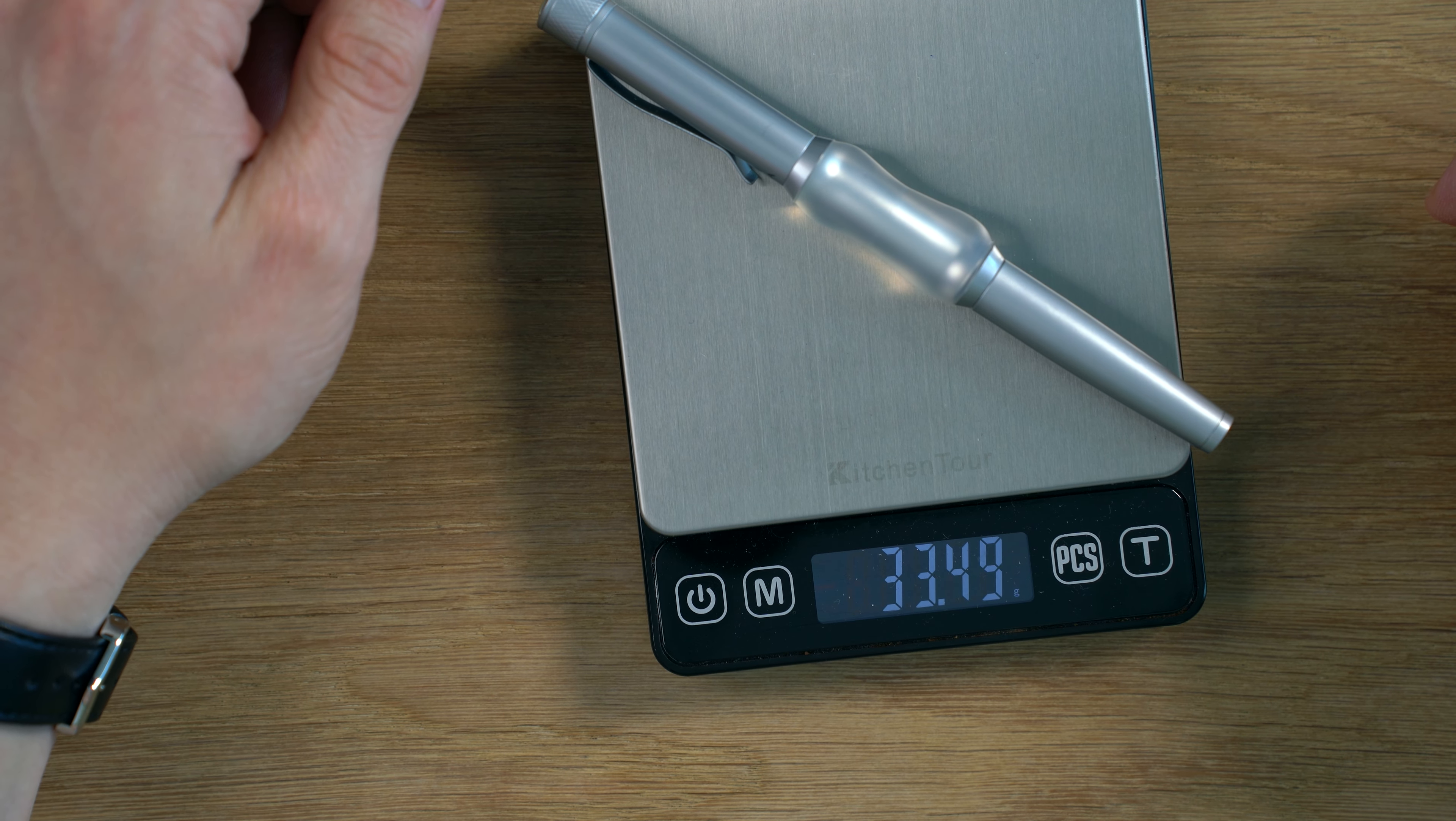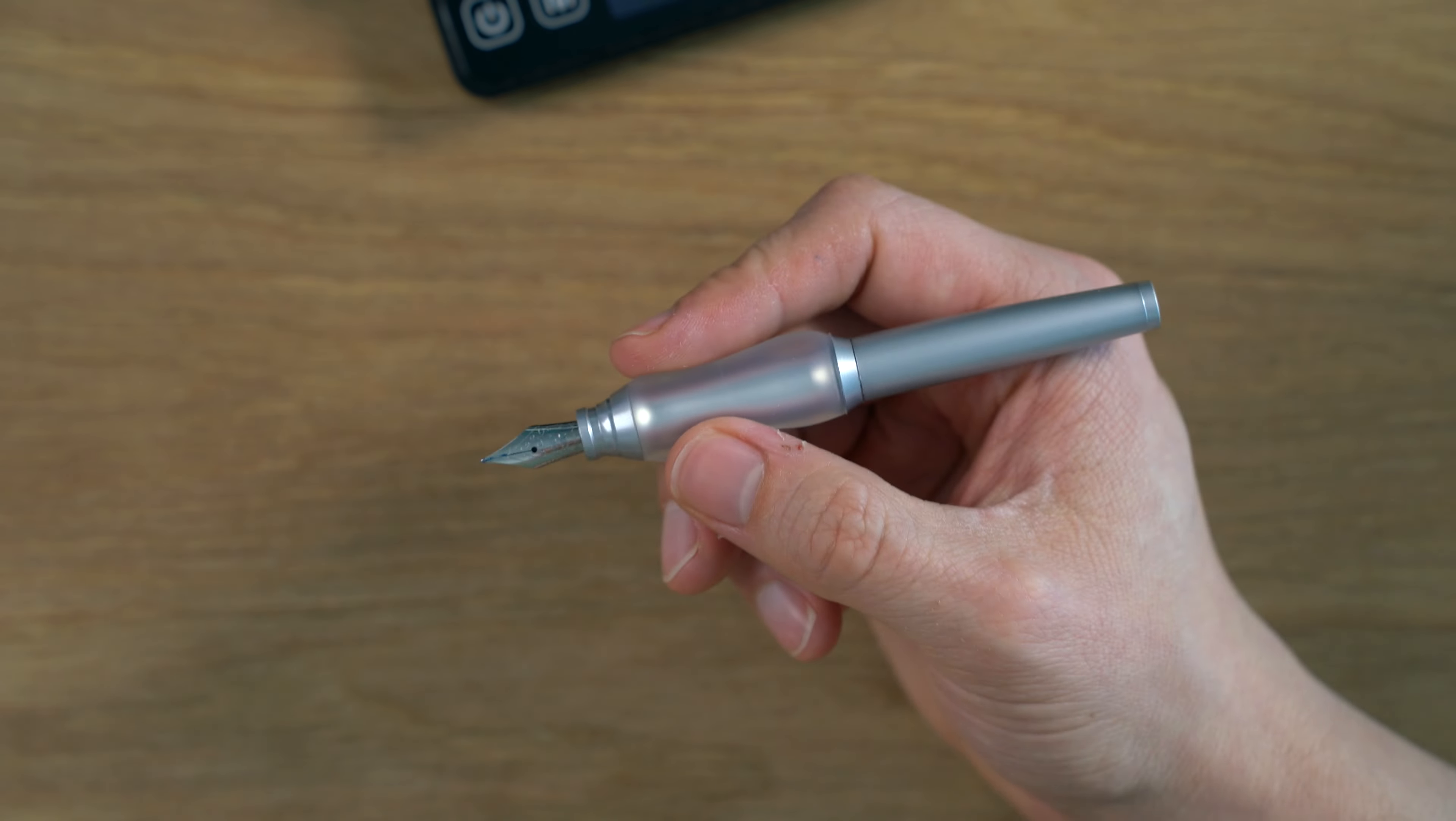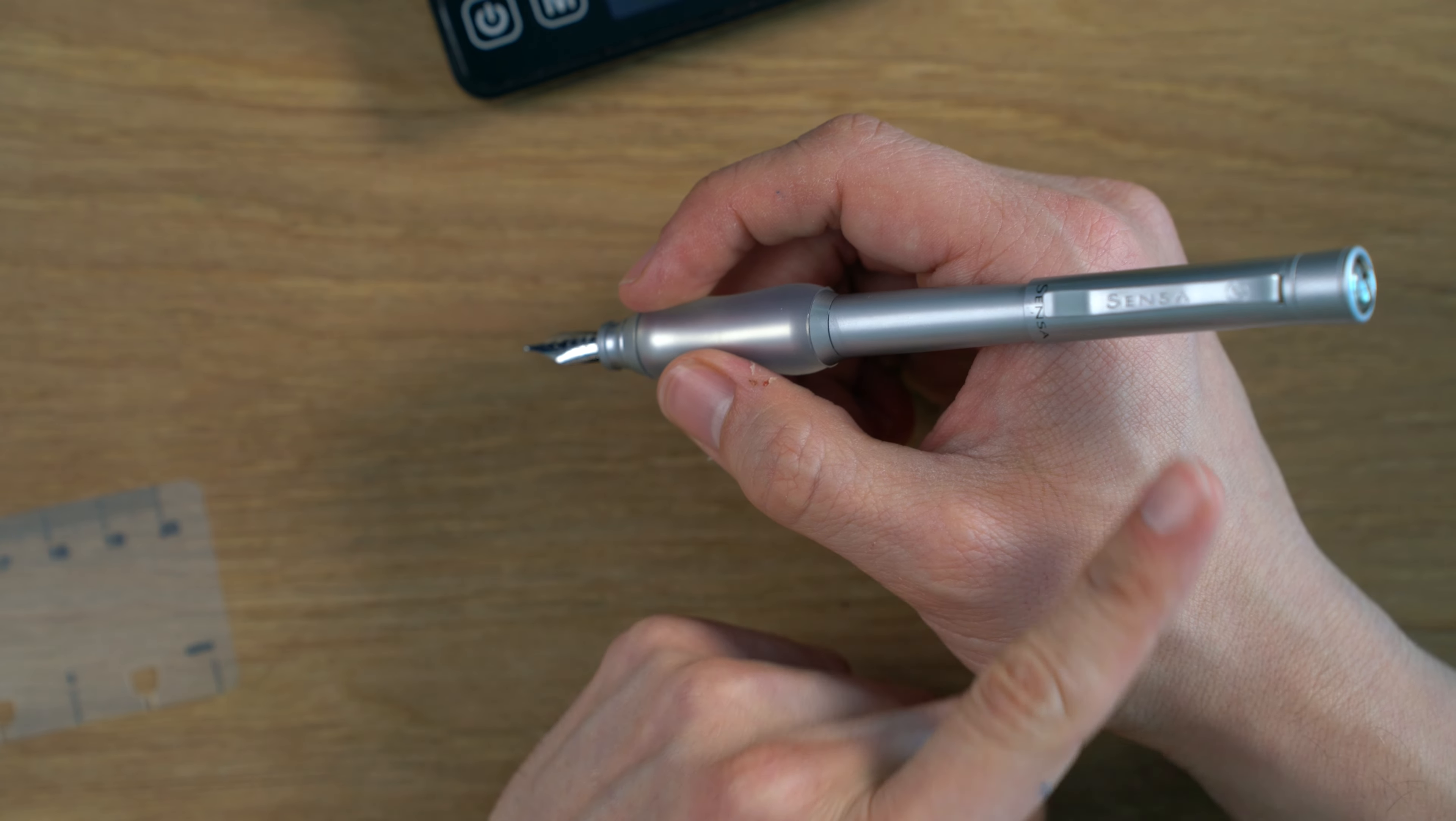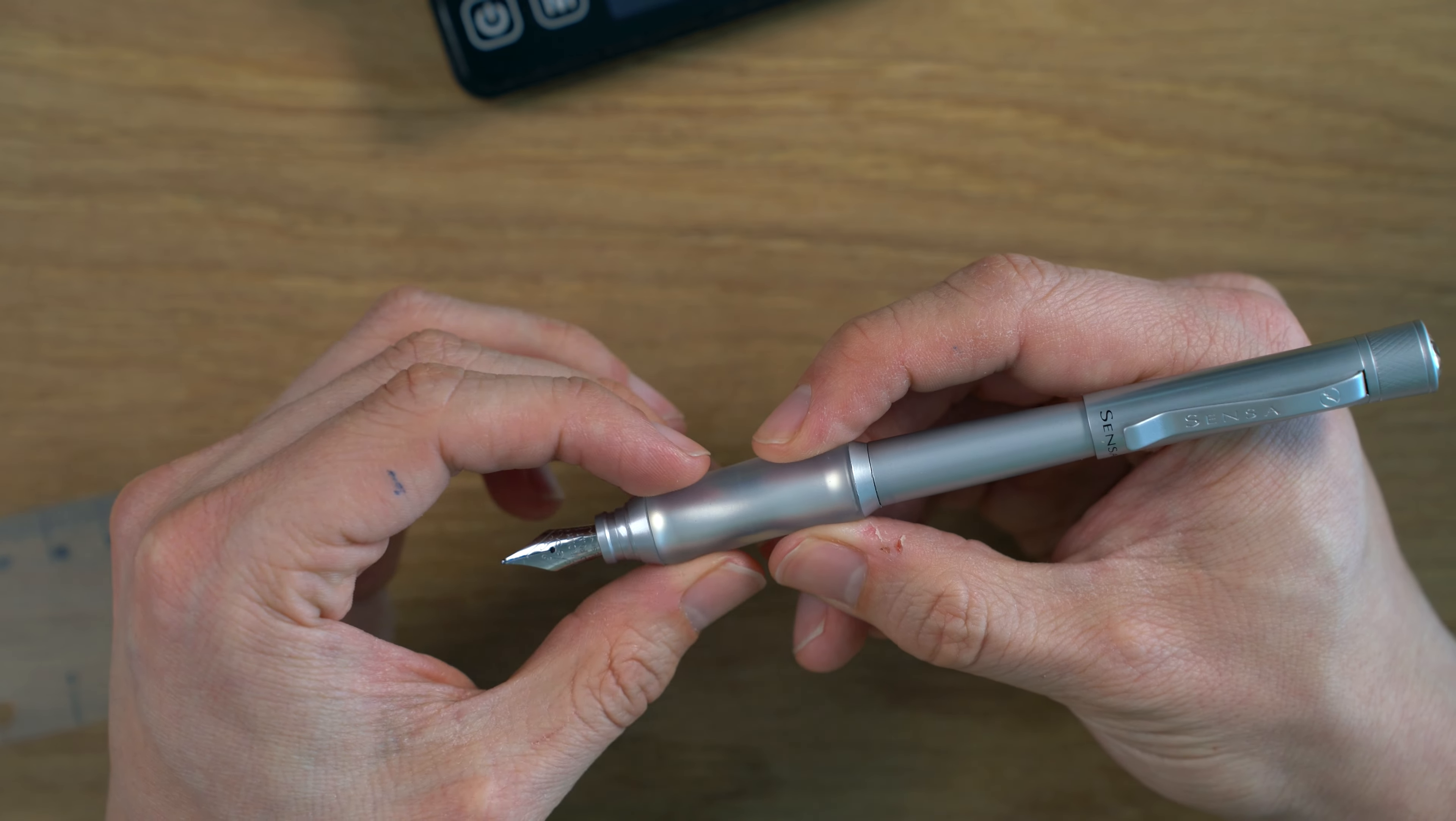Now, let's do the weight. 33.49 grams, so good weight to it. I mean, it is a metal pen. And then, unposted, 19.9. So, not too heavy unposted. It is a short pen. If you have big hands, you're going to want to use this posted. No question about it. I find it comfortable posted. Unposted does work for me, but if you have bigger hands, I think you're going to need to use it posted. It does balance pretty well. This is quite a comfortable pen. Is it the world's most comfortable pen? I'm not sure about that, but it is comfy. I do like the feel of the grip section. It is cool.